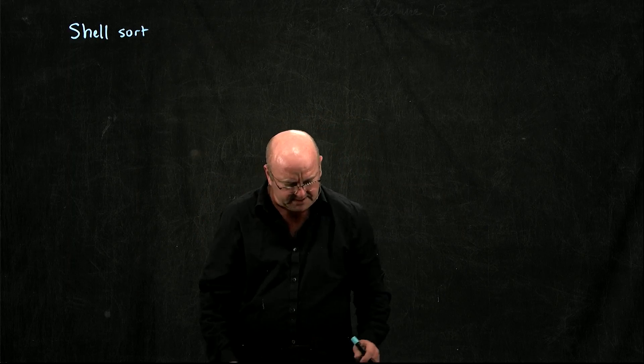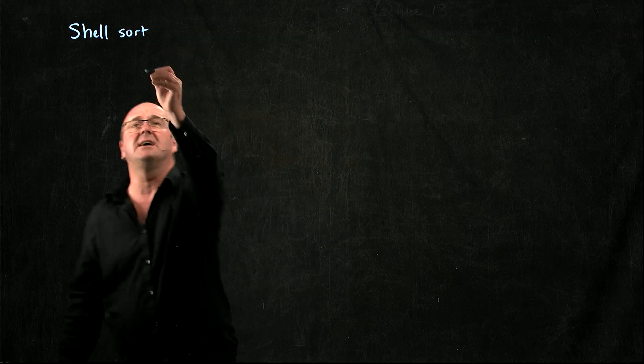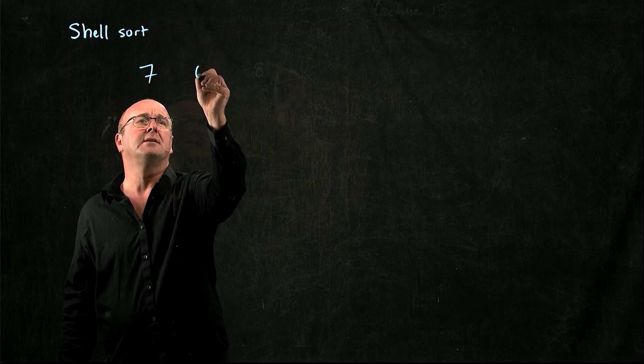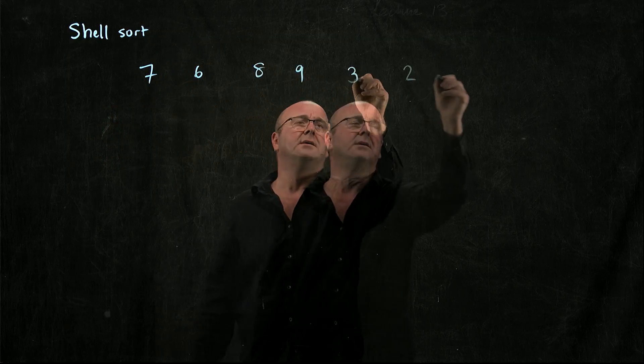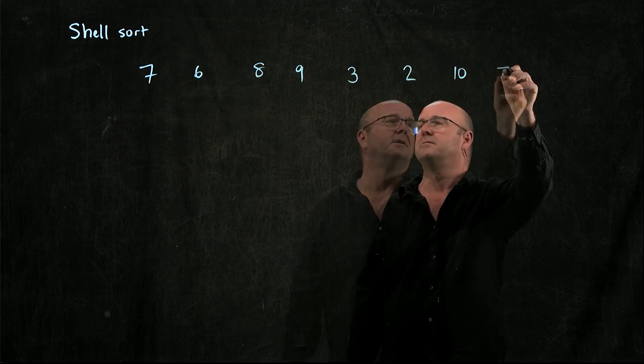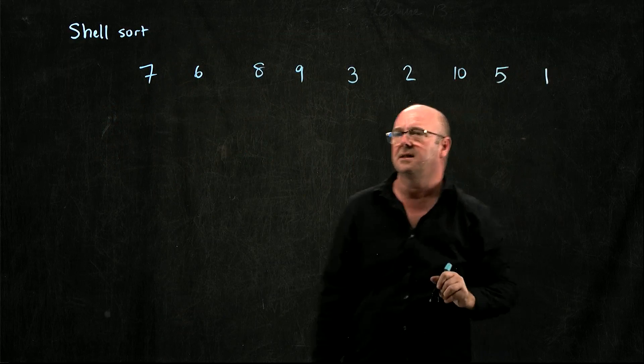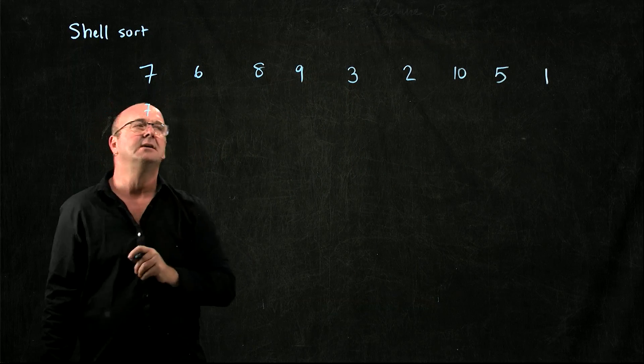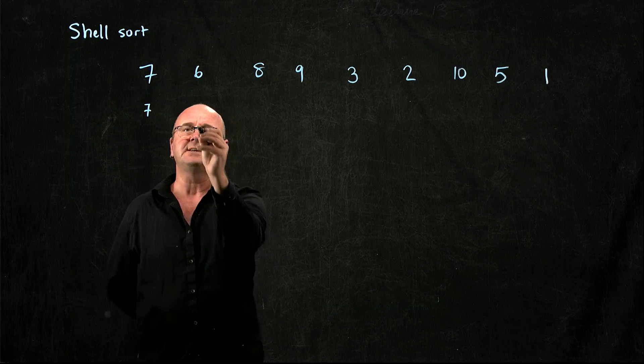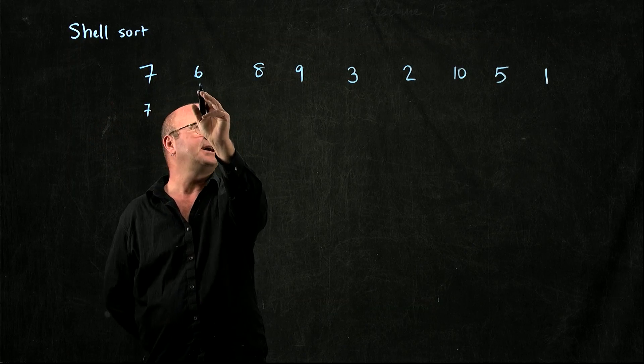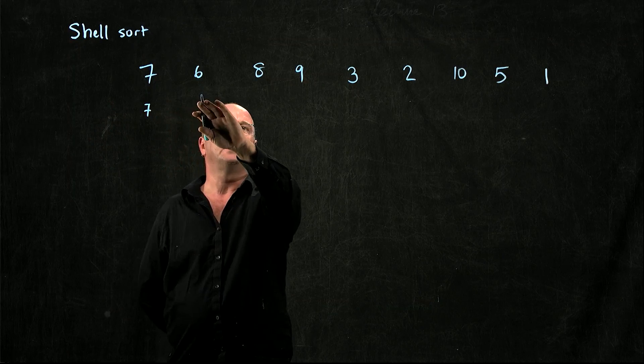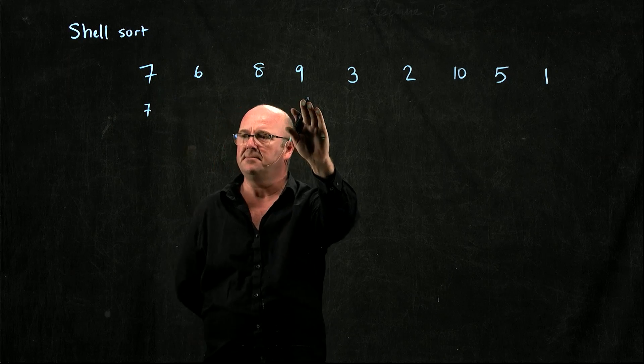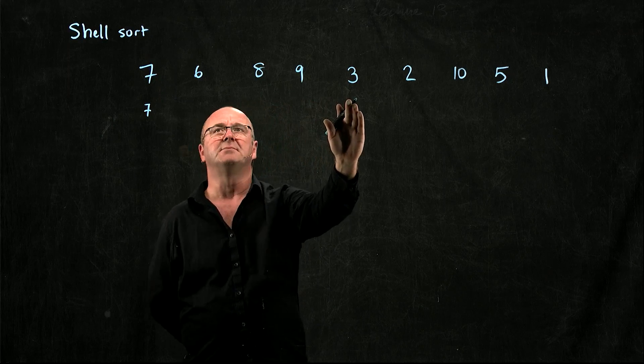For example, the way the shell sort works is if we have a list of numbers like this. What I'm going to do is I'm going to take the first number, the 7, and then I'm going to have a fixed width gap. And so my gap in this case is going to be 3 numbers. Now let's say 4 numbers.